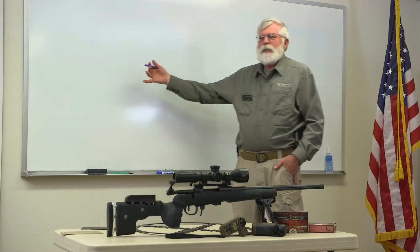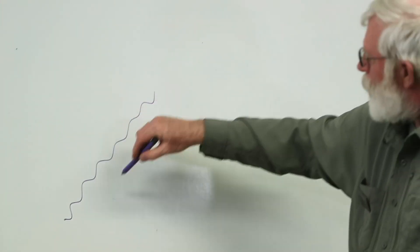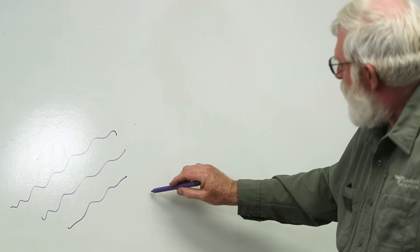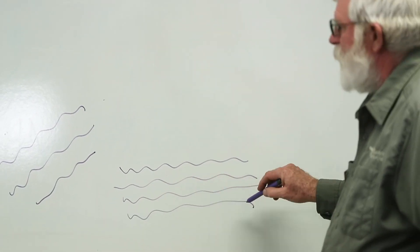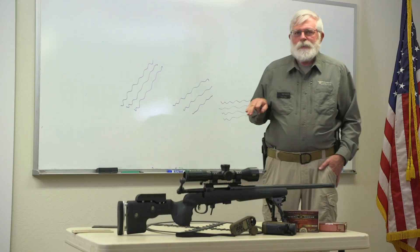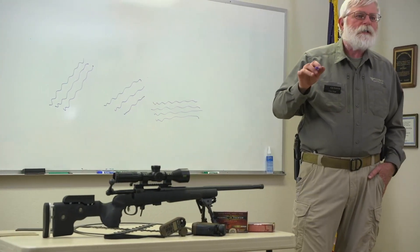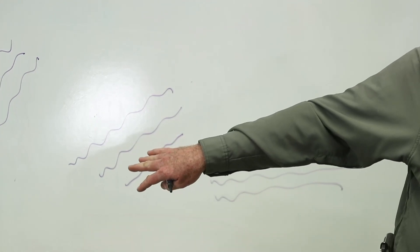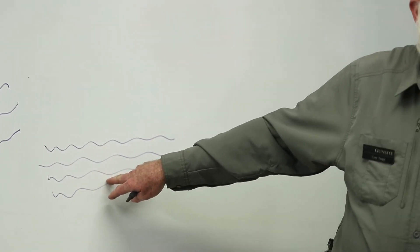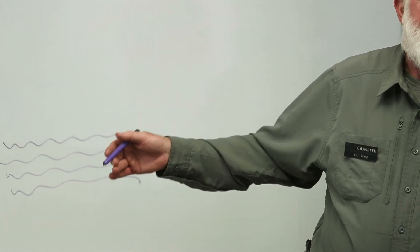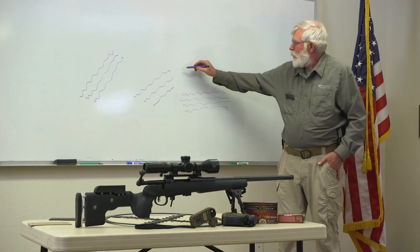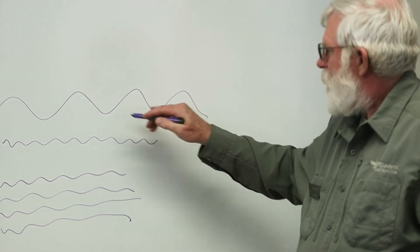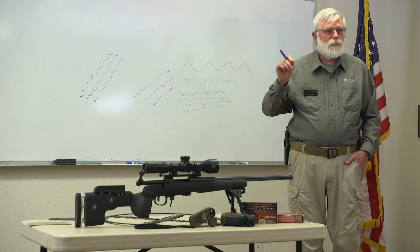As the wind starts to move across the range, your mirage will start to form angles, until it finally gets what we call a running mirage, where it appears flat. As the angle approaches about 30 degrees, you're looking at somewhere between 2 and 5 miles an hour. As the angle approaches 45 to 50 degrees, you're looking at 5 to 8 miles an hour. As the wind flattens it out, you start to look at 8 to 10 miles an hour. If your spotting scope has enough resolution, you can also look at the actual amplitude of the wave.